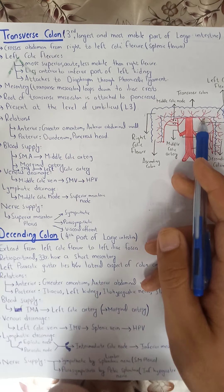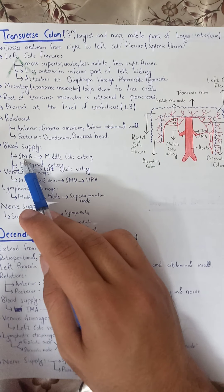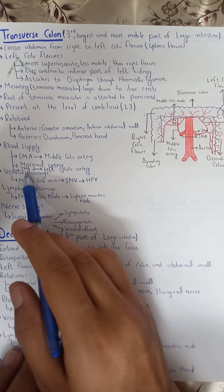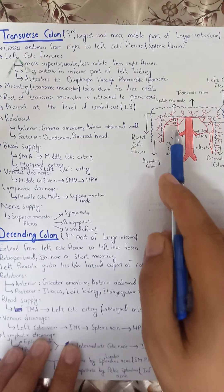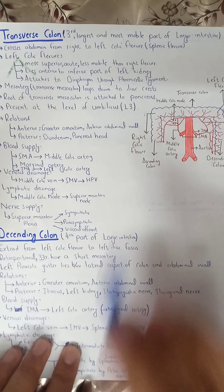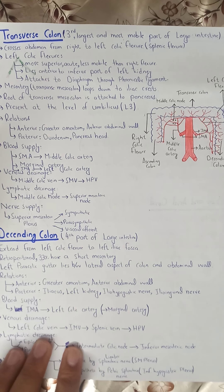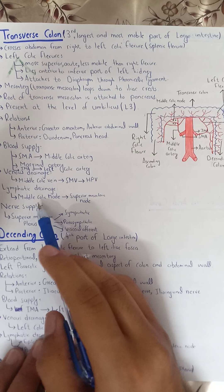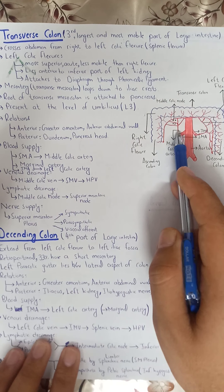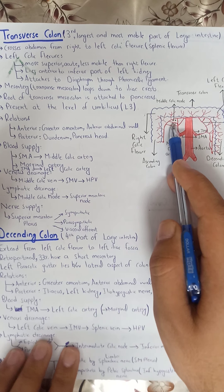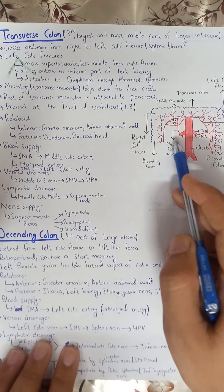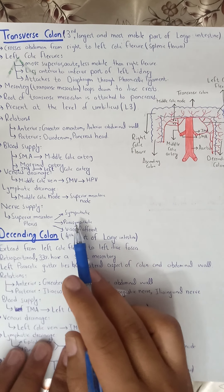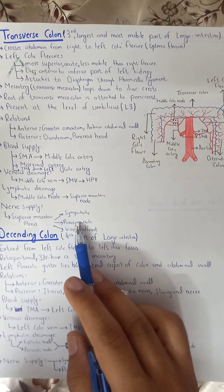Blood supply of transverse colon: the right two-thirds is midgut supplied by the middle colic artery from the superior mesenteric artery; the left one-third is hindgut supplied by the left colic artery from the inferior mesenteric artery. These anastomose via the marginal artery. Venous drainage is via the middle colic veins into the superior mesenteric vein, then into the hepatic portal vein. Lymphatic drainage goes to the middle colic nodes. Nerve supply is from the superior mesenteric plexus — sympathetic, parasympathetic, and visceral afferent fibers including vagus nerves.